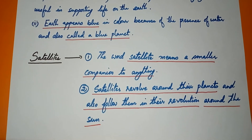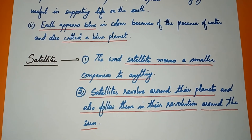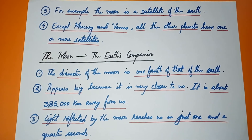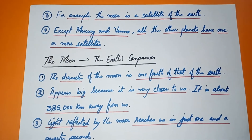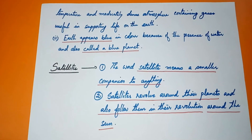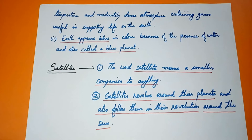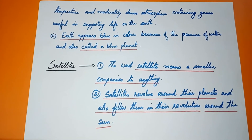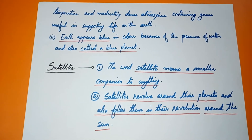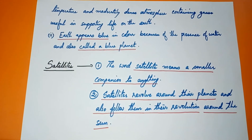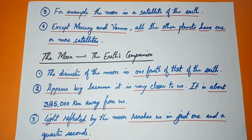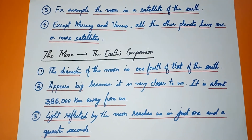The next term is satellites. The word satellite means a smaller companion to anything. Satellites revolve around the planets and also follow them in their revolution around the sun. For example, the moon is the satellite of the earth. Except Mercury and Venus, all the other planets have one or more satellites.